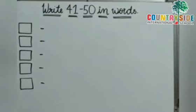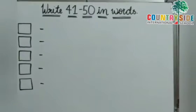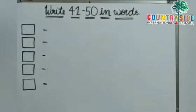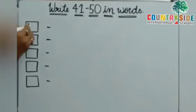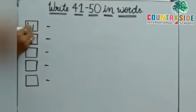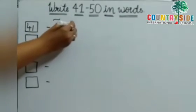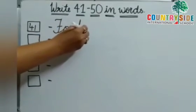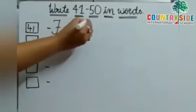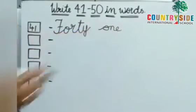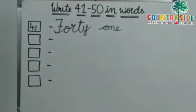So children, this is our page number 59. Write 41 to 50 in words. In the box you have to write 41. Capital F-O-R-T-Y. 40. O-N-E. 1. 41. Next.